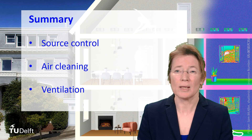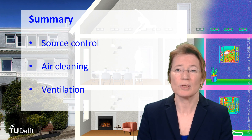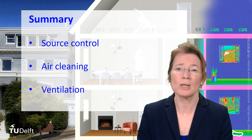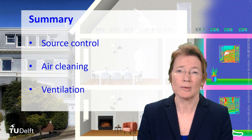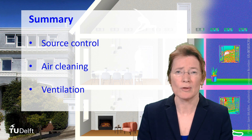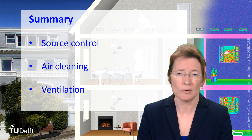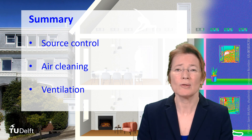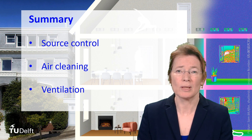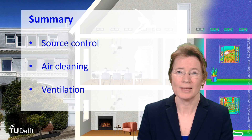To summarize this lecture: an important control strategy for indoor air quality is to reduce emissions of pollution sources as much as possible by using low-emitting products and materials — source control. If that is not possible, for example when you are cooking or the outdoor air is polluted, then you can choose to ventilate and/or clean and filter the air. How to ventilate properly and how much ventilation is required depends on the pollutants and the situation. Thank you for your attention.